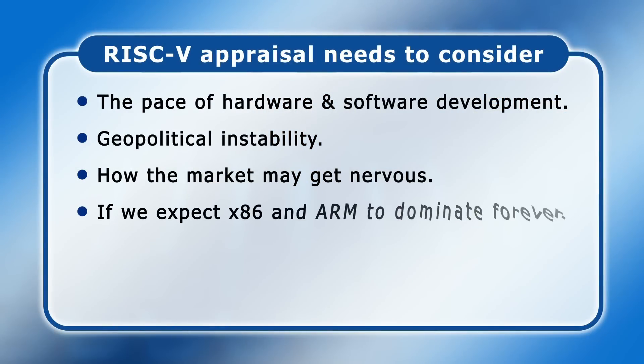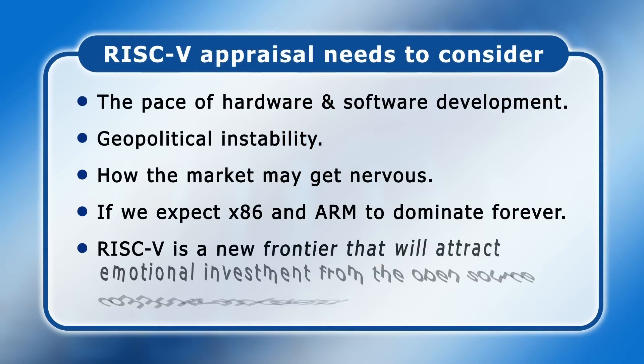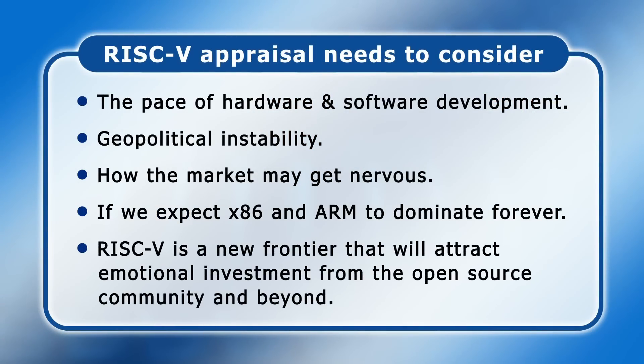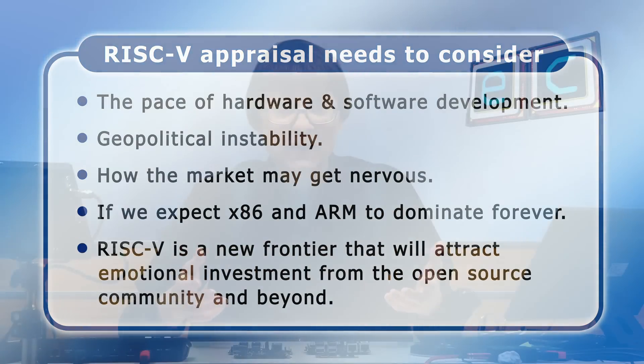We should also ask if we expect x86 and ARM to dominate forever. Even people who don't think RISC-V will have any impact beyond embedded computing aren't saying that because they think the current state of affairs in the computing industry is perfect and that nothing should change. And if we don't think that x86 and ARM can and should dominate forever, that doesn't mean RISC-V will have an impact — but it means that something will have to at some point. And it's quite likely that something will be based on more open IP if it's going to have a chance of being broadly adopted. So it may well be RISC-V. And finally, RISC-V is a new frontier that will attract emotional investment from the open source community and beyond, and we shouldn't underestimate the significance of this. There are loads of people out there with great technical competence who'd like to be a part of something new, and RISC-V offers that opportunity.